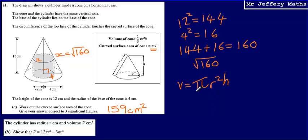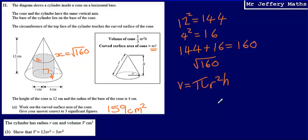What we can see from our formula, comparing it to the expression we've been asked to show, is that there is no letter h in this expression for the volume. So we're going to have to figure out a way to write h using the radius in some way.